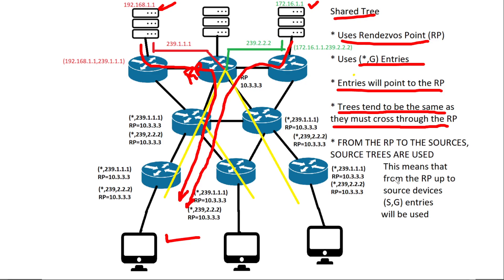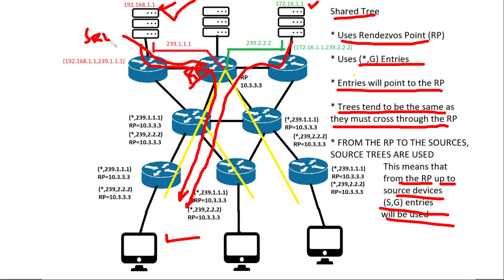Notice that from the rendezvous point up to the source devices, different trees will occur, so S,G entries will be used. From this rendezvous point to this source, we will be using a source tree, and from this rendezvous point to this other source, we will be using another source tree. But from the rendezvous point to the receiving devices, a share tree is used.